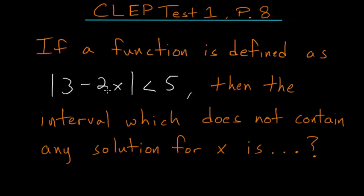If a function is defined as the absolute value of 3 minus 2x is less than 5, then the interval which does not contain any solution for x is what?